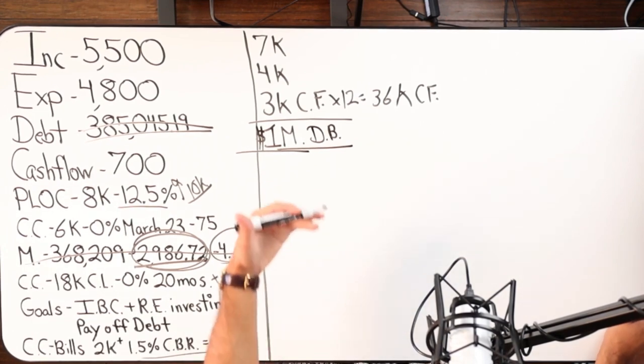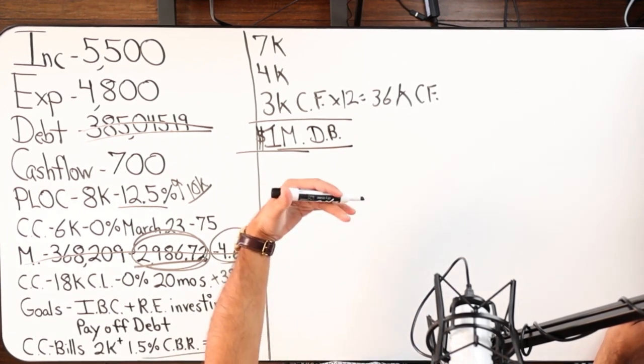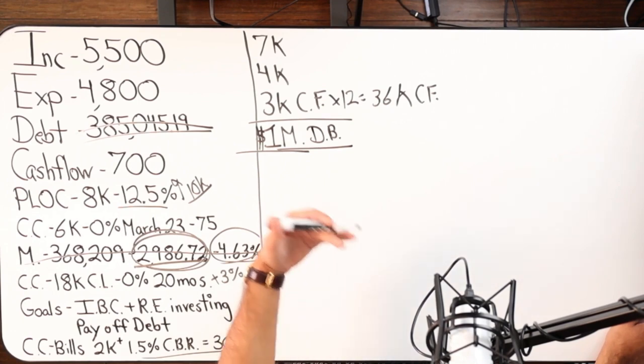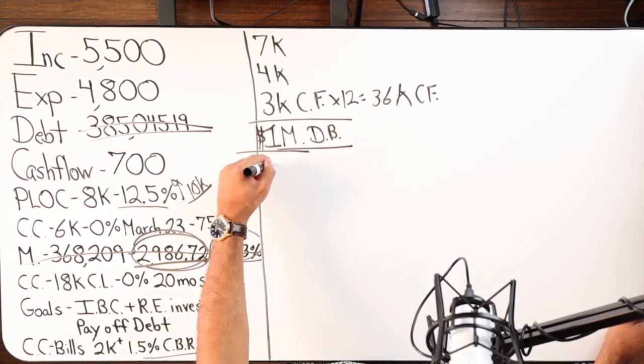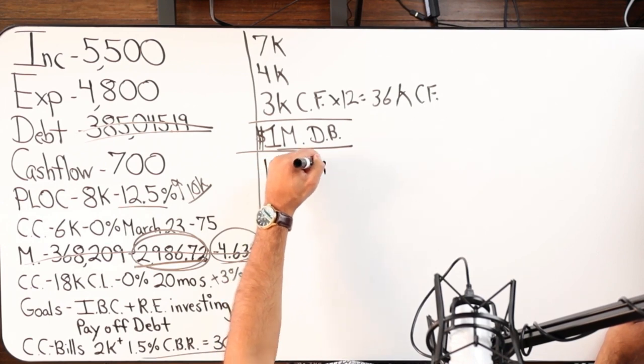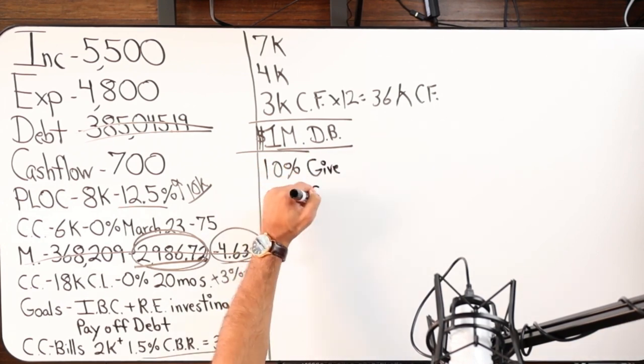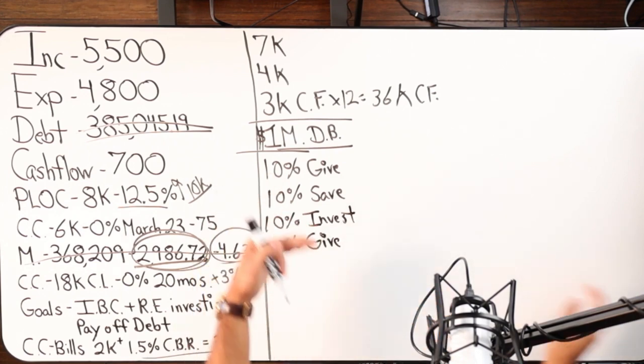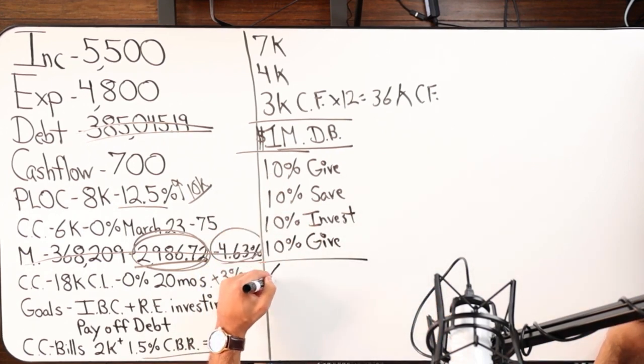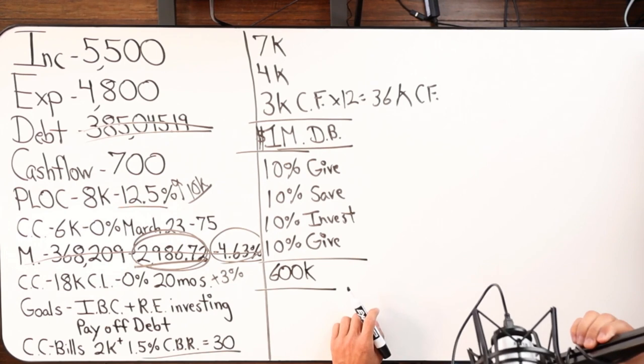From a kingdom perspective, this is just principles of life. Here's what I would do: immediately off the top, I want to give 10%, save 10%, invest 10%, then I'm going to give another 10% on top of the 10%. That leaves me with $600k.